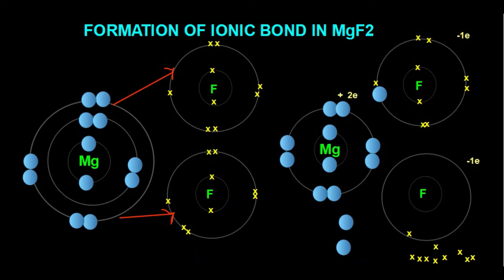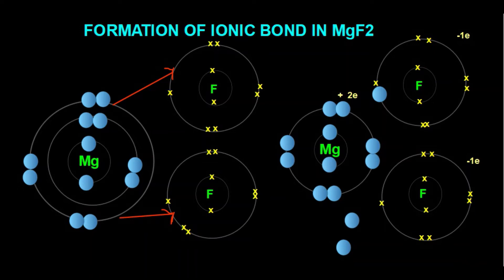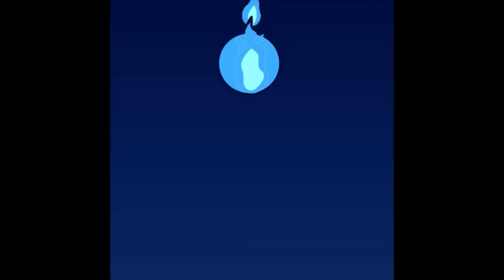Similarly, the second fluorine atom gains the other electron from magnesium and is also converted into a fluoride ion: K shell — 2 electrons, L shell — 8 electrons after gaining the electron. In this way we have 2 fluoride ions and 1 magnesium ion. These positive and negative ions are held together by electrostatic force of attraction. This is how the ionic bond is formed in magnesium fluoride.